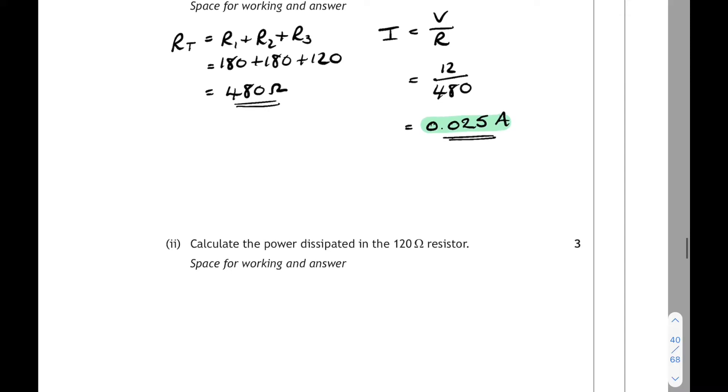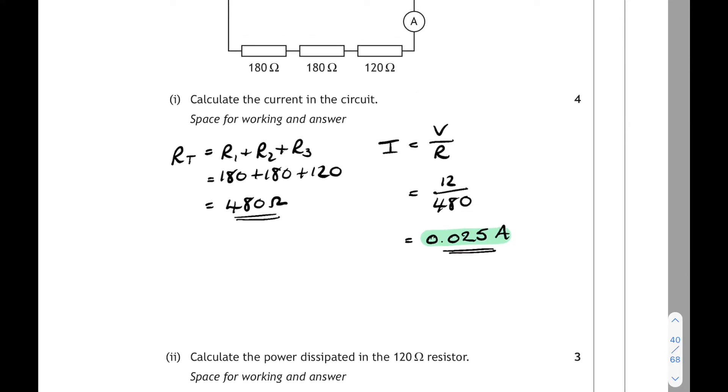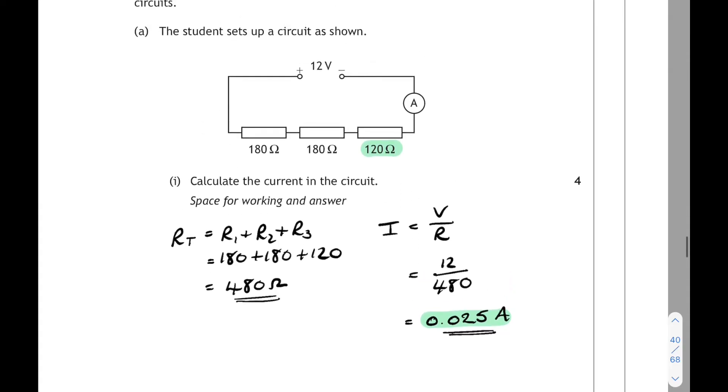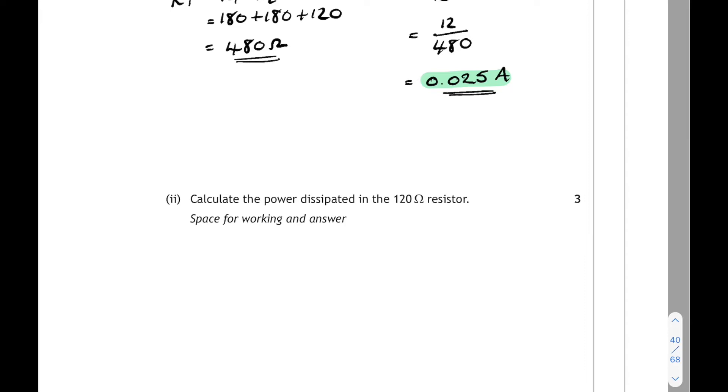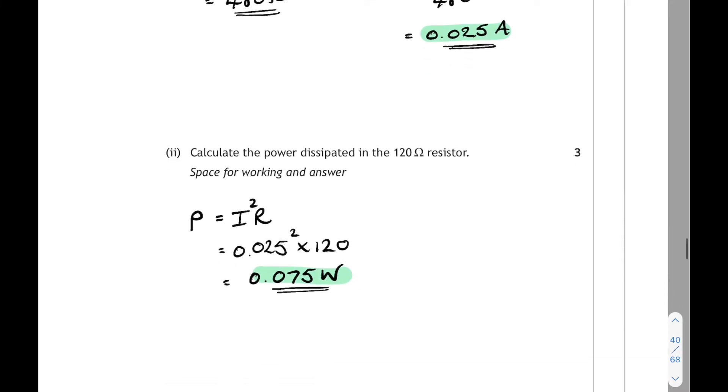And then calculate the power dissipated in the 120 ohm resistor. Well, we've just worked out the current. These two parts of the question are connected, part one and part two. So let's use the current and the resistance and use the power equation. P equals I squared R. And use the current we've just worked out. Don't forget to square it. Times the 120 ohm resistor. And we'll get an answer of 0.075 watts. That's the power produced in that resistor.